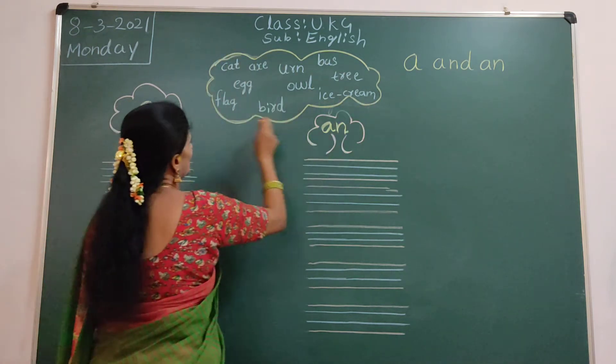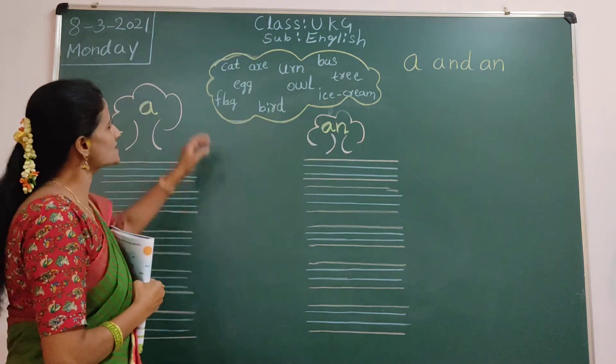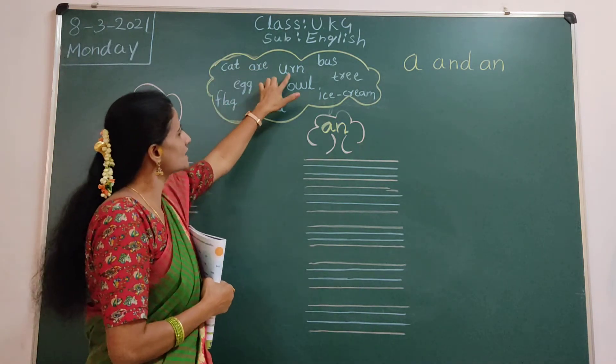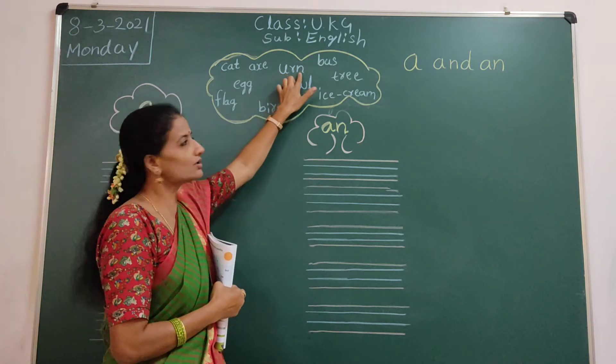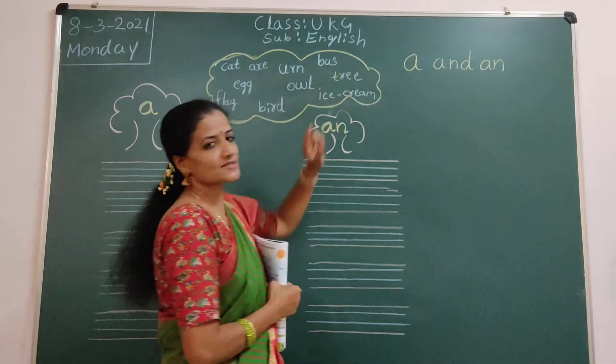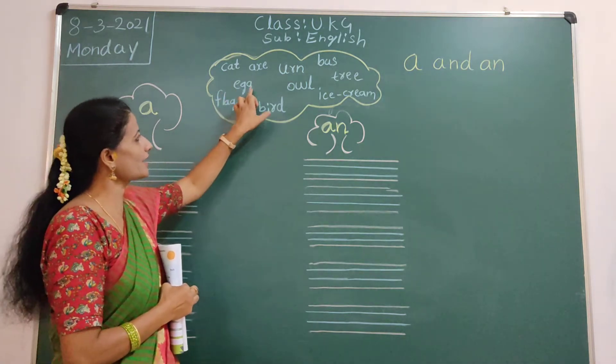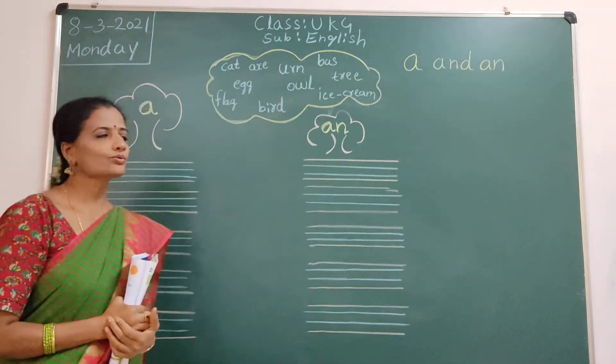Like this. Crown. Ok. Here, write some words. C, a, t, cat. A, x, e, axe. U, r, n, urn. B, u, s, bus. E, g, g, egg. O, w, l, owl.